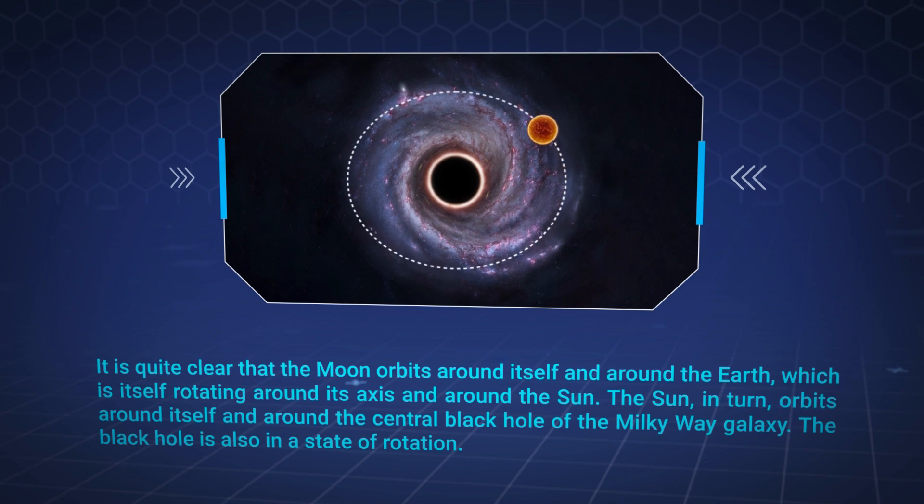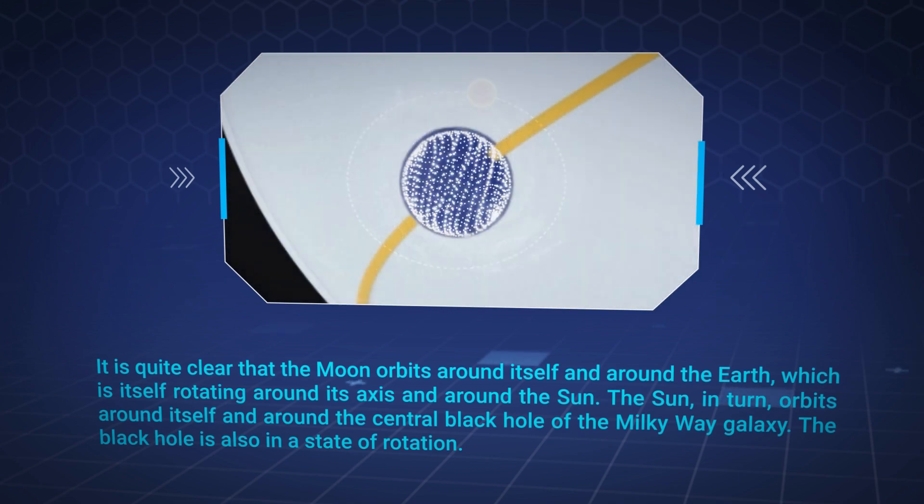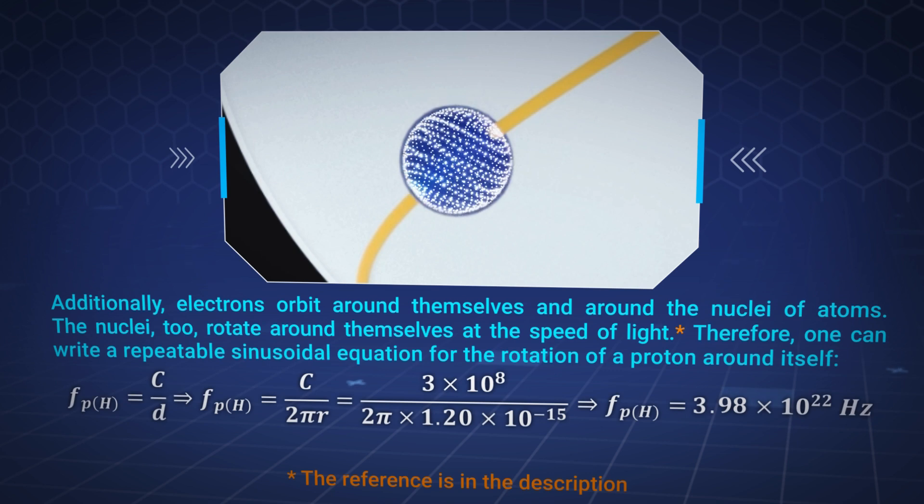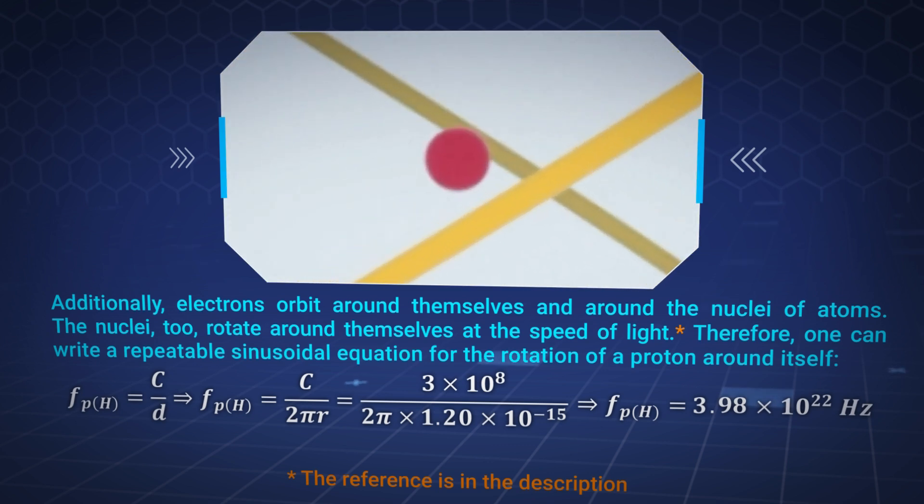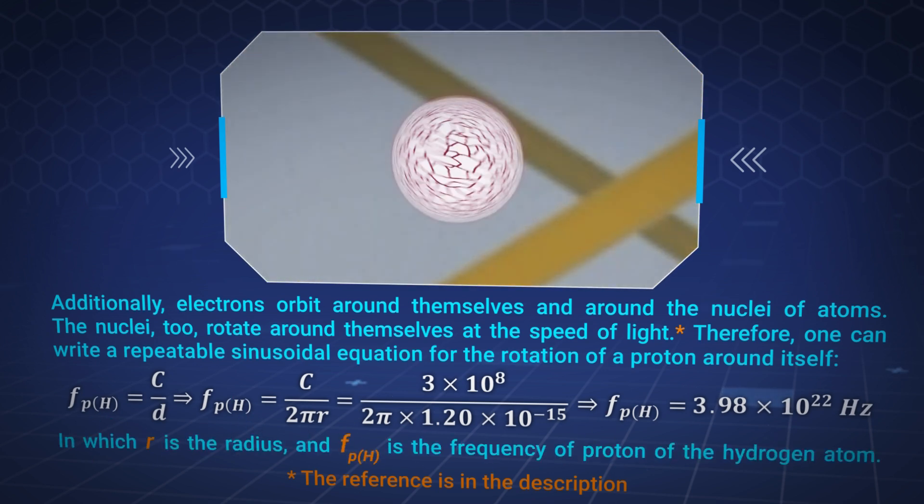The black hole is also in a state of rotation. Additionally, electrons orbit around themselves and around the nuclei of atoms. The nuclei also rotate around themselves at the speed of light.